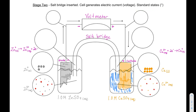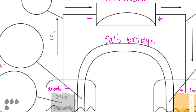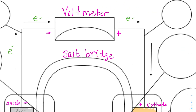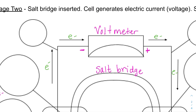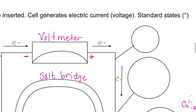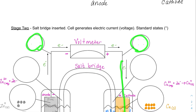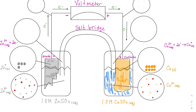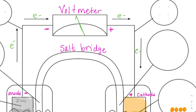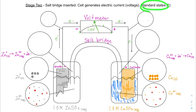Let's draw the electrons going up through the wire. There are four electrons total being transported through the wire at one point in time; they then come down through the metal and into the copper solution. Our voltmeter should now read 1.10 volts — because we have the cell at standard states, at least for right now.